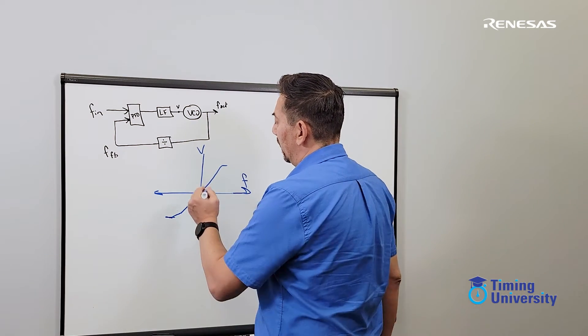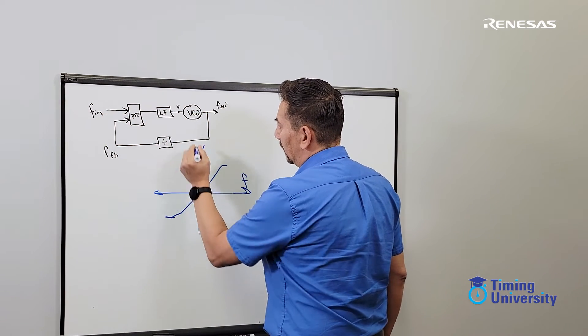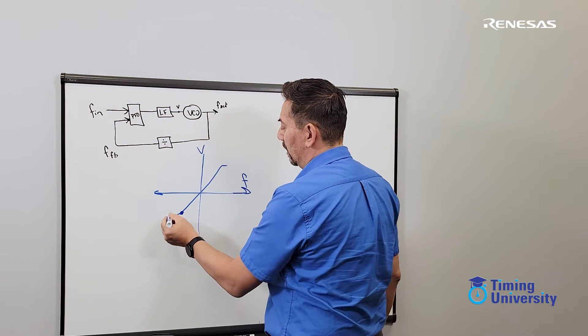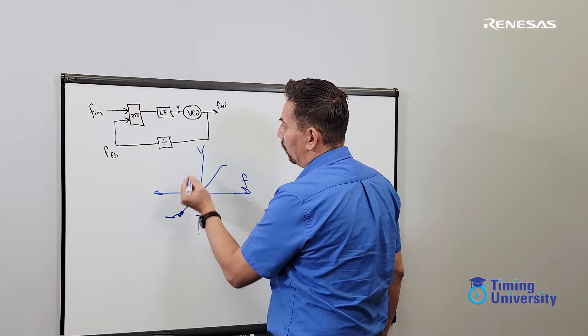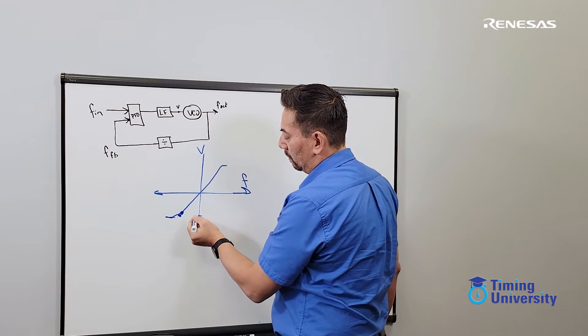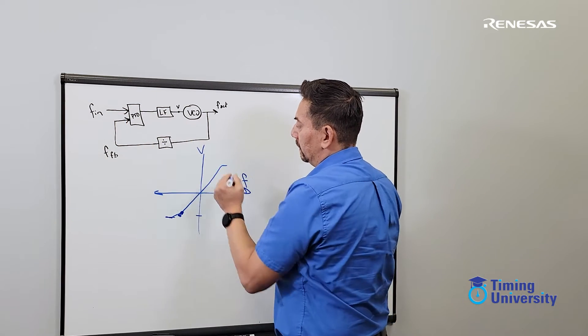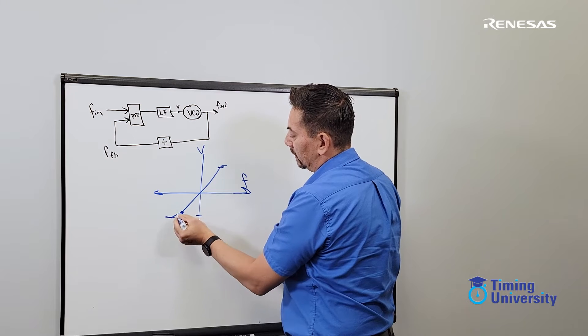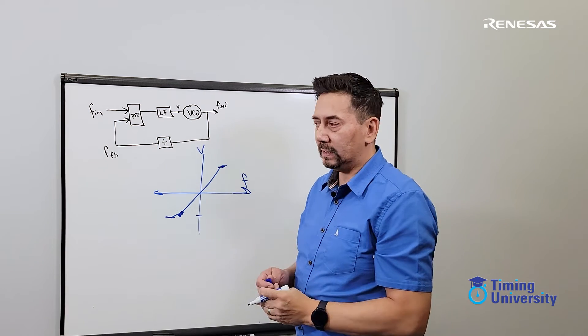So if the PLL is railed low, for example, the input is gone, the loop filter is going to set the maximum low voltage that it can. So that voltage going into a VCO will be low. Now, conversely, if the frequency is too high, it's going to set the voltage too high. So there's the low and the high range of the VCO.